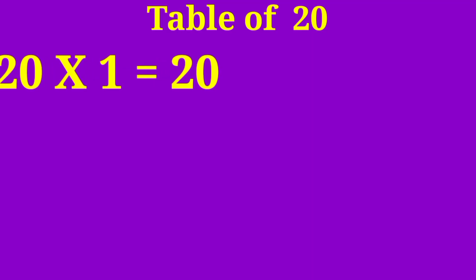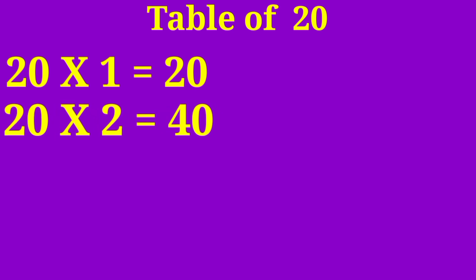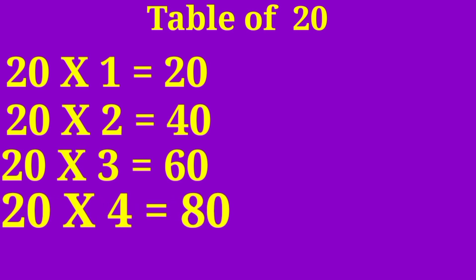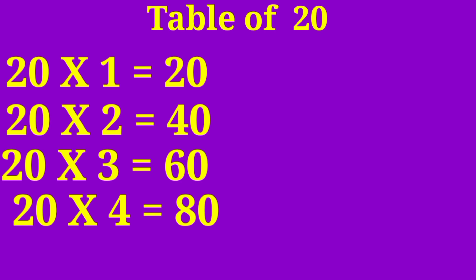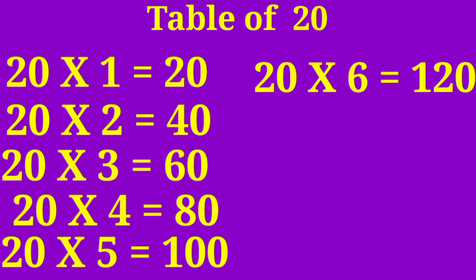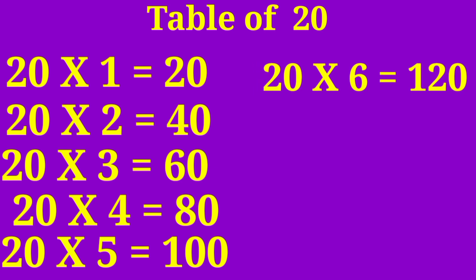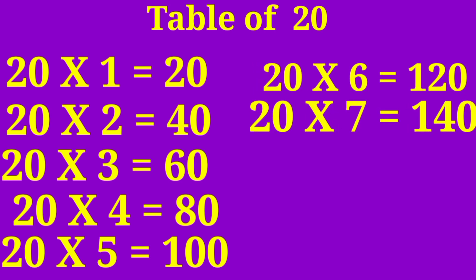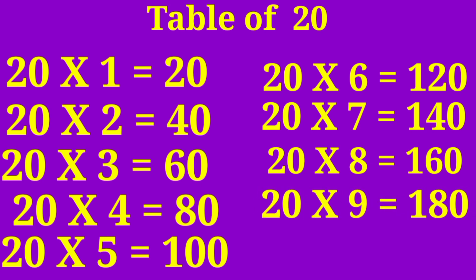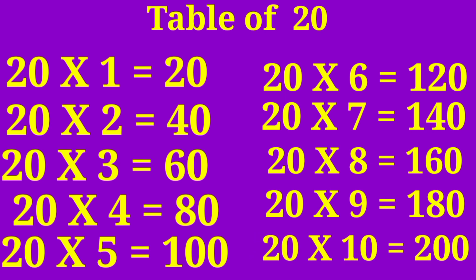Table of 20: 20×1 are 20, 20×2 are 40, 20×3 are 60, 20×4 are 80, 20×5 are 100, 20×6 are 120, 20×7 are 140, 20×8 are 160, 20×9 are 180, 20×10 are 200.